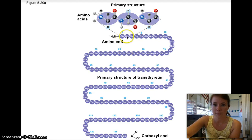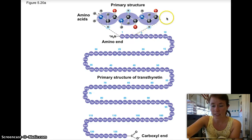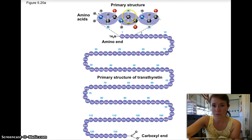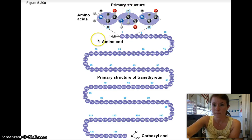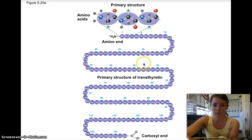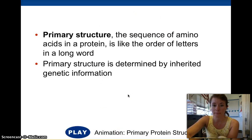So a primary structure example would be: Gly, Pro, Thr, Gly, Thr, Gly — that's our amino acid sequence. You can see the carbon attached to an amino group, a carboxyl group, an H, and an R group. So primary structure is simply what order the amino acids are in.